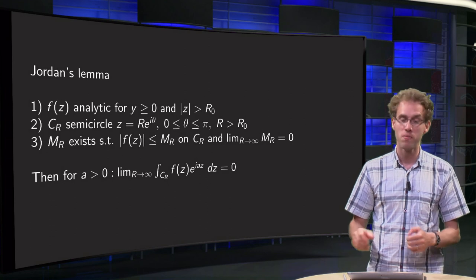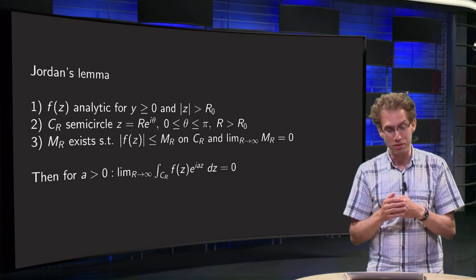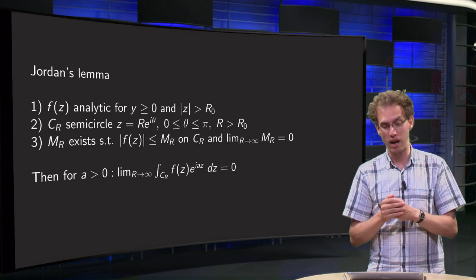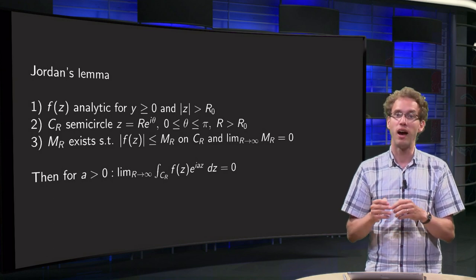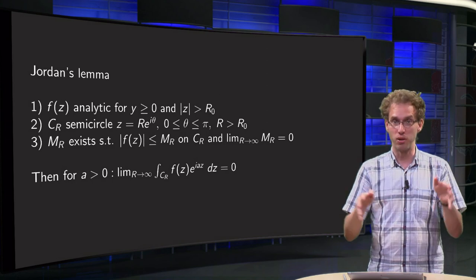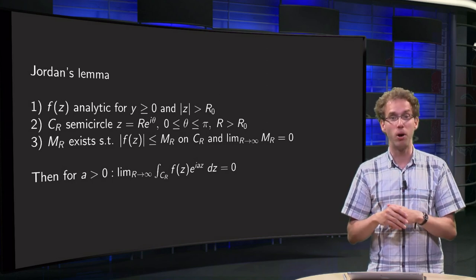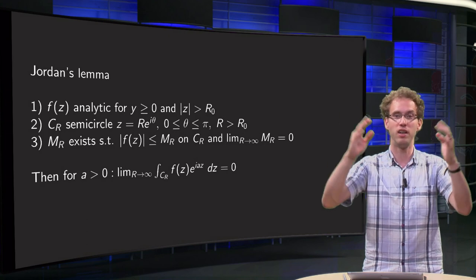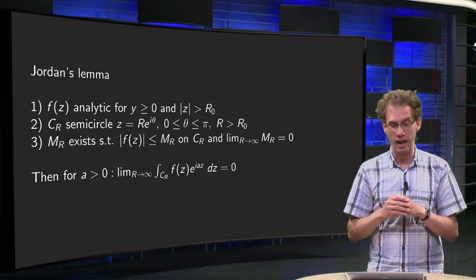So what are the conditions? Well, the function f(z) has to be analytic in the upper half plane, so for Im z ≥ 0, and around some circle of radius r₀, so you can take your r₀ large. Outside that circle your f has to be analytic.